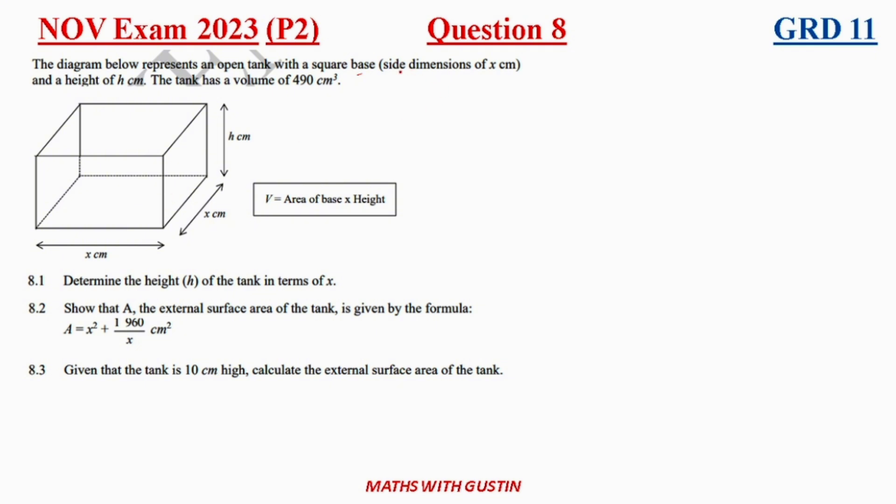So this is a square which will help us a lot, and then the height is written as h in centimeters. And then the tank has a volume. They already give us the volume. Now let's go ahead and they also give us a formula. Let's go. 8.1 says determine the height of the tank in terms of x. So 8.1, we need to determine the height in terms of x.